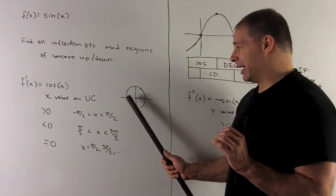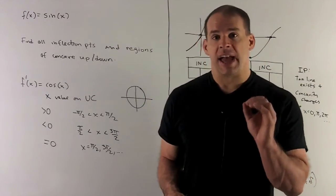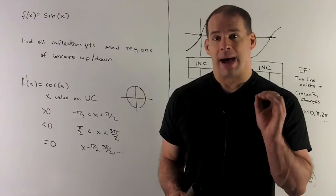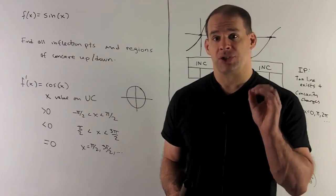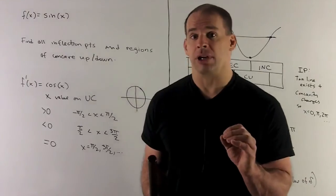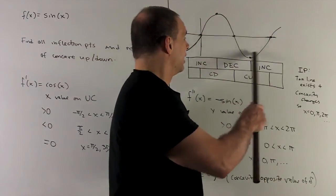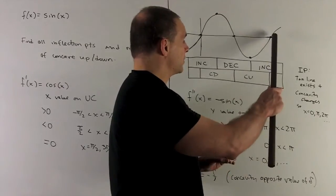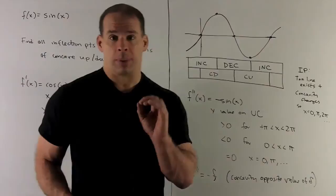As I go from pi to 2 pi, what's going to happen there? The sine is negative, so minus sine is going to be positive. So the function of sine of x is going to be concave up on that region. So we're going to go from pi to 2 pi, concave up, so the bowl faces up there. So that definitely pans out for our picture.